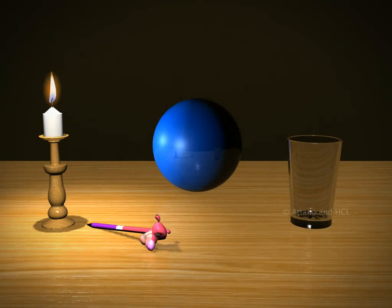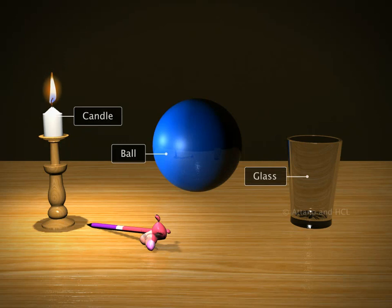Let's do an activity to solve the mystery of the disappearing sun. We need a ball, a candle, an empty glass, and a pen.